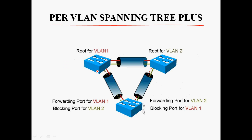Per-VLAN Spanning Tree Plus. In this topology, three switches are connected in a triangle: Switch A, Switch B, and Switch C. In Switch A we can create VLAN 1 and VLAN 2, Switch B also we can create VLAN 1 and 2, and Switch C also we can create VLAN 1 and 2.